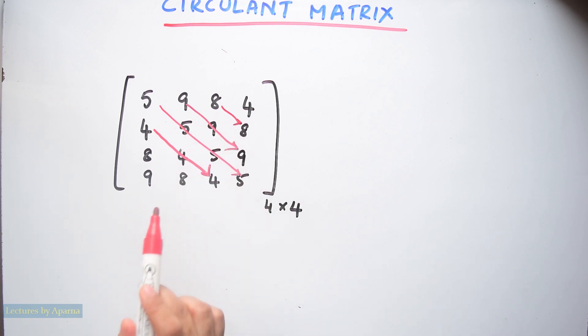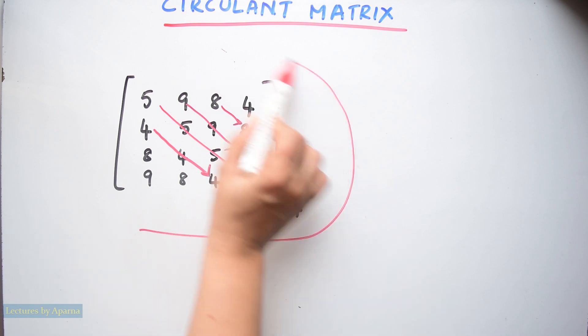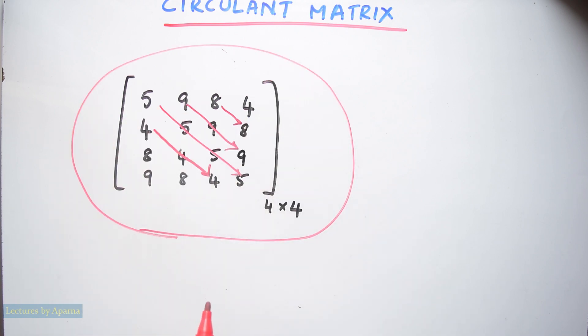So the circulant matrix is a Toeplitz matrix. To be a Toeplitz matrix, the descending diagonals from left to right should be constant. But a Toeplitz matrix may or may not be a square matrix. Circulant matrix is surely a square matrix. So this is what circulant matrix means.